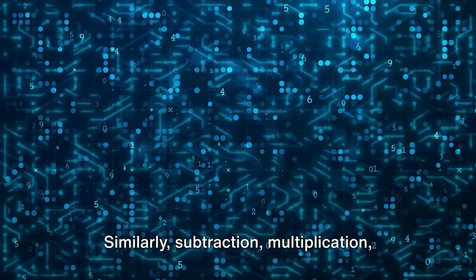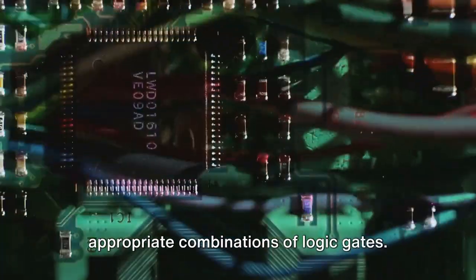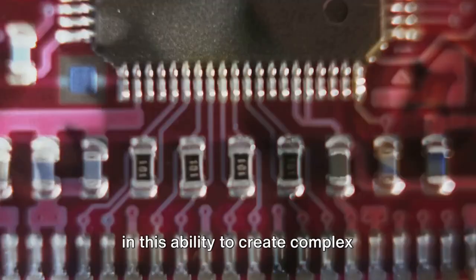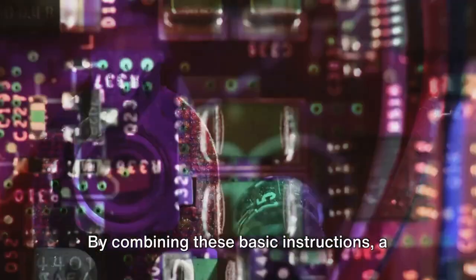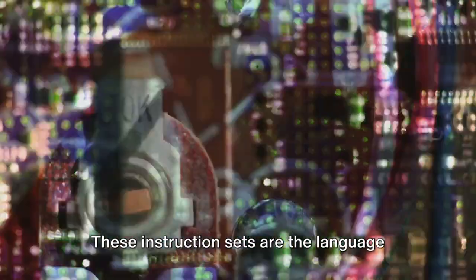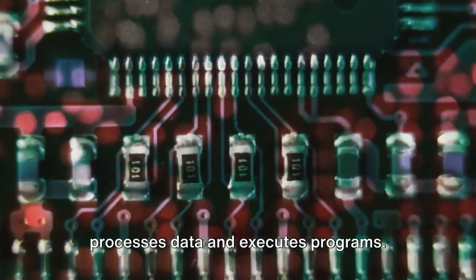Similarly, subtraction, multiplication and division can be performed using appropriate combinations of logic gates. The beauty of digital logic design lies in this ability to create complex operations from simple building blocks. But the story doesn't end here. By combining these basic instructions, a more complex instruction set can be formed. These instruction sets are the language of the computer. They tell the computer exactly what operations to perform and when to perform them. This is the foundation of how a computer processes data and executes programs.